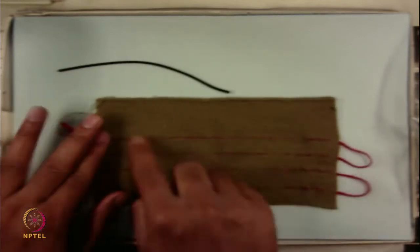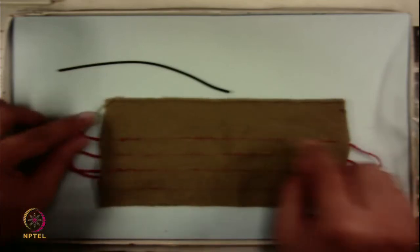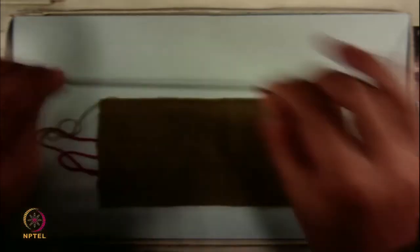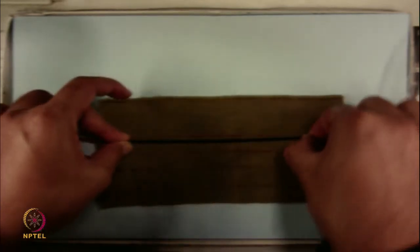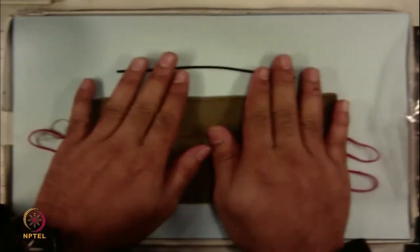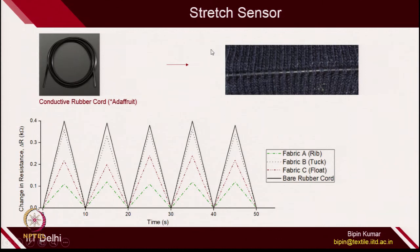Once these sensors are there, you can integrate them inside the fabric structure. You can see the red one is integrated inside the rib structure and is part of the fabric. Similarly, you can integrate these types of stretch sensors inside the fabric and generate stretch-monitoring fabrics for e-textiles. For different types of double jersey fabrics — whether you go for rib design, tuck design, or float designs — different types of performance can be achieved. Usually, the tuck one gives better results in a stretch sensor.